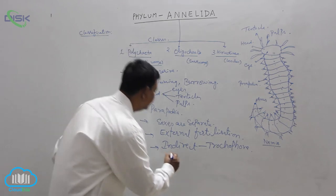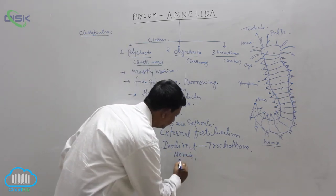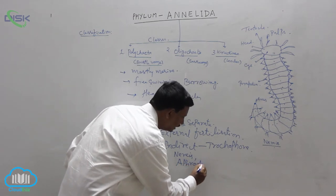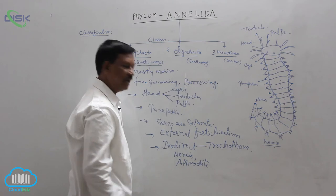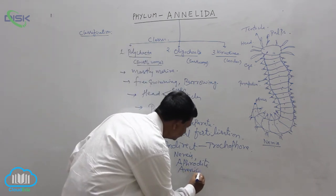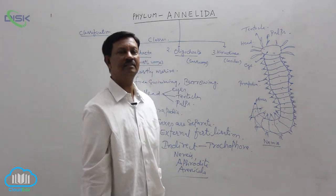Examples are Nereis, Aphrodite, which is commonly known as the sea mouse, and Omnicola. These are the important examples that come under this class.